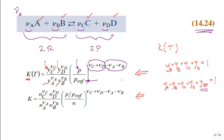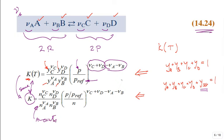Now let's look at this second equation — how is it different? The K is the same equilibrium constant, same function of temperature. The difference is Ys versus Ns. These Ns are the amounts in kilomoles or moles.